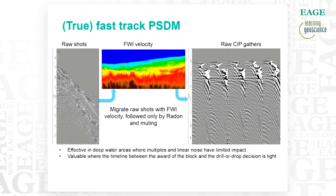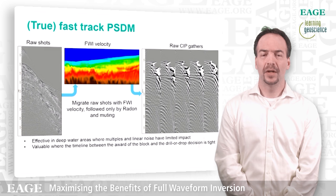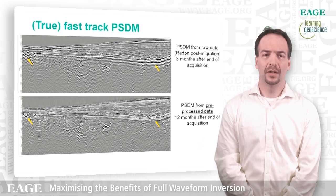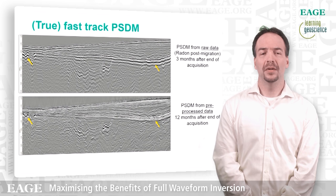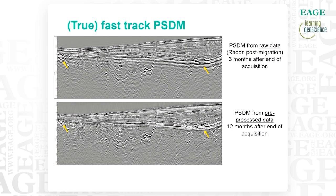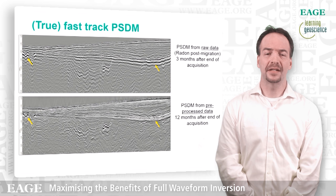You can see on the image on the right that our gathers have the primary event nice and flat, but there are plenty of multiples and linear noise — things we can easily take care of in post-imaging processing. On the top is our Fast Track PSDM; we think that on an average-size server we can produce this image in about three months after the end of acquisition. At the bottom is the image with full processing. Obviously the bottom image looks much sharper — in particular, deghosting makes a great difference as highlighted by the orange arrow. But structurally those two images should look very similar, and the idea is to give this image in about three months to our interpreters to give them a clear head start before getting the final image 12 months later.